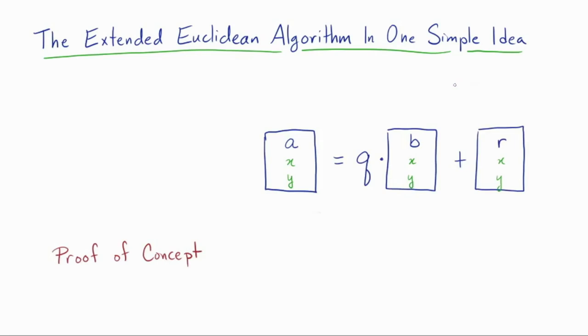Welcome to this proof-of-concept video. The goal today is to tack on one brilliant little idea to the Euclidean algorithm, to turn it from an algorithm that computes the greatest common divisor into an algorithm that solves linear diophantine equations, finds modular inverses, performs the Chinese remainder theorem, and much more.